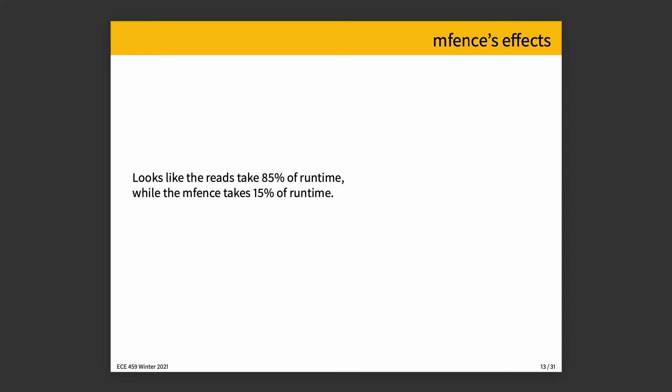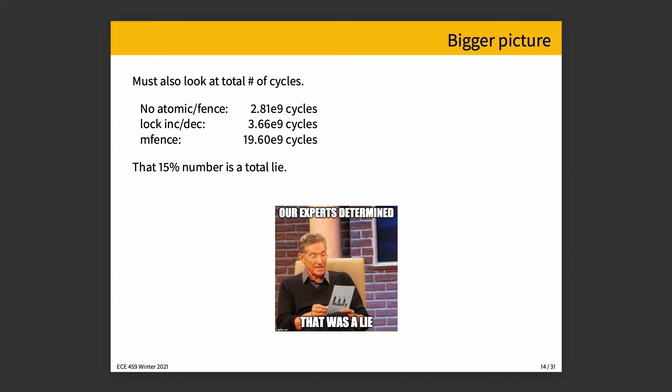Because of the very nature of this topic, there is a distinct possibility that you are immediately suspicious of these facts and figures as presented, as you should be. Let's take a look at what we see. If we also look not just at percentages, but at the total number of cycles, if we don't do any atomics or fences, then it takes 2.81 times 10 to the power of 9 cycles. With locks, it's 3.66 times 10 to the power of 9. And with MFence, it's 19.6 times 10 to the power of 9. Which is to say that our 15% is a lie.